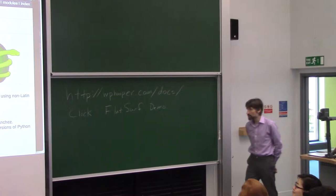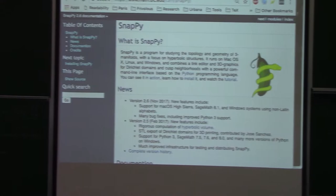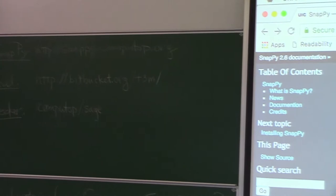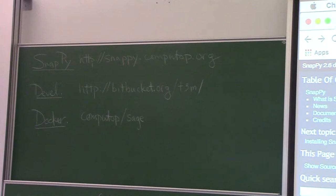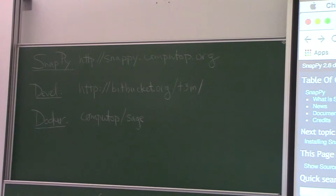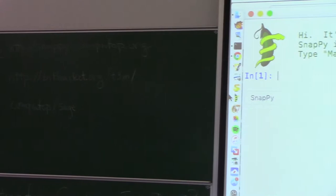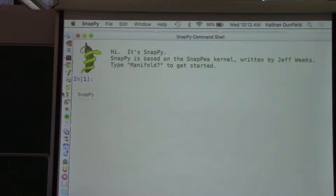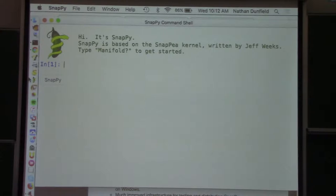All right, so I'm supposed to tell you briefly about the program SnapPy, which is a program for studying hyperbolic structures on three manifolds. You can get it at the URL that's up there. This is a program that works on Macs, Windows, and Linux. It does not work on the iPad. I'm going to show you the program here on the Mac, but it works essentially the same way on any platform. My talk has three parts. First I'm just going to give a very basic introduction to SnapPy, then I'm going to show you some recent features, and then I'm going to show you some stuff we did yesterday.